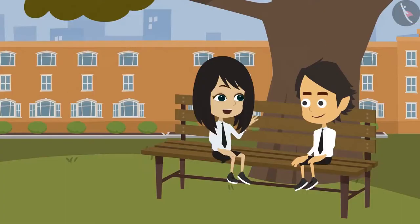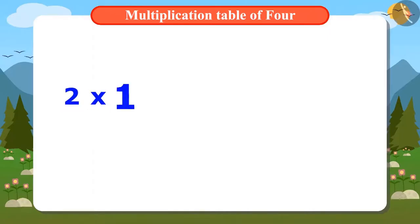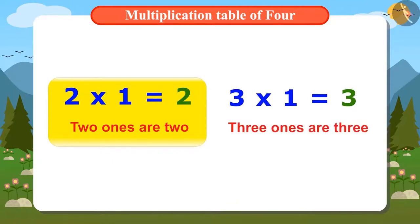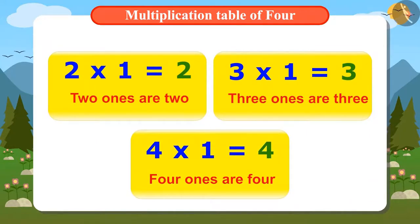That's why 2 ones are 2 and 3 ones are 3. Ones means? Aiyushman, we sing to memorize the tables easily. That's why 2 times 1 equals 2 is read as 2 ones are 2, and 3 times 1 equals 3 is read as 3 ones are 3. Oh, that means 4 times 1 equals 4 is read as 4 ones are 4.